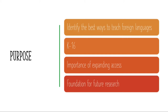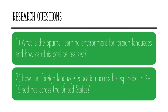The purpose of this study is to identify the best ways to teach foreign languages, to look at the different plans between kindergarten through 16 and ways to teach them along those lines, to show the importance of expanding access for foreign language education, as well as to provide myself with foundational knowledge for a future research project. The research questions are: what is the optimal learning environment for foreign languages and how can it be realized? And how can foreign language education access be expanded in K through 16 settings across the United States?